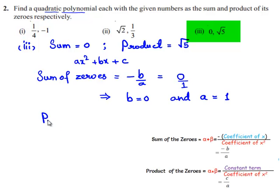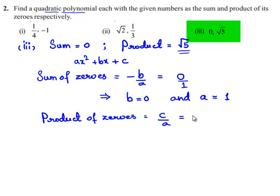Now the product of the zeros is equal to c by a, and the given product of the zeros is root 5.